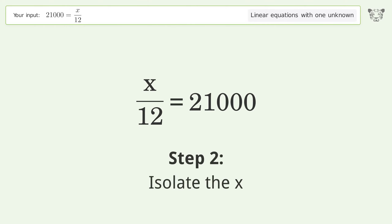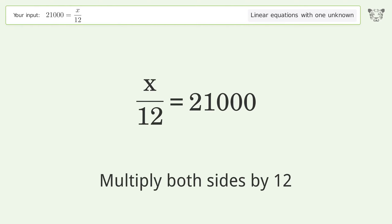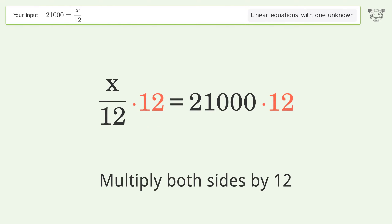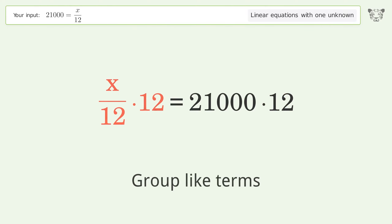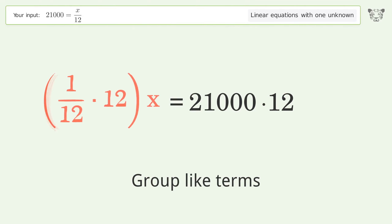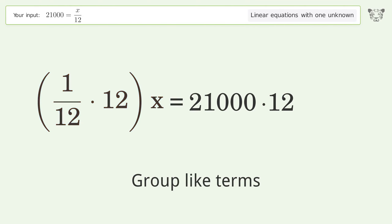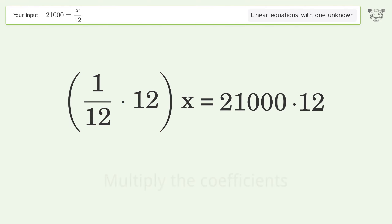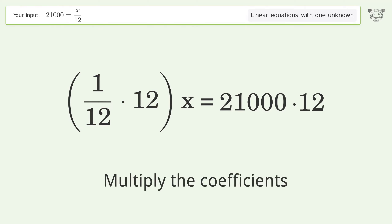Isolate the x — multiply both sides by 12. Group like terms. Multiply the coefficients.